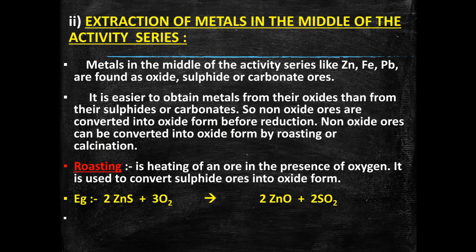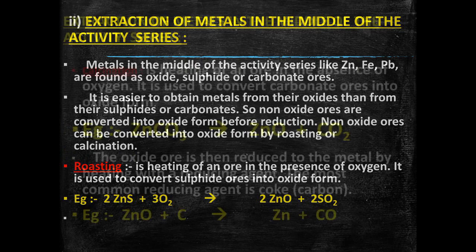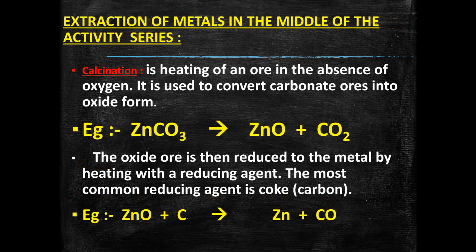Before learning the reduction of metal oxide, let's also discuss calcination, as calcination also gives the metal oxide as the main product. The carbonate ores are converted to metal oxide by this process. For example, zinc carbonate — ZnCO3 — when heated in absence of oxygen gives zinc oxide, and carbon dioxide gas is evolved.